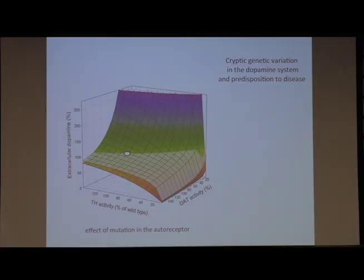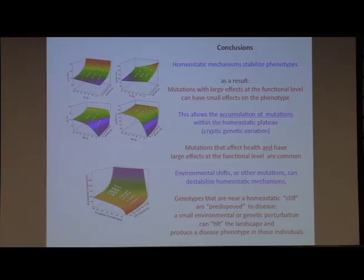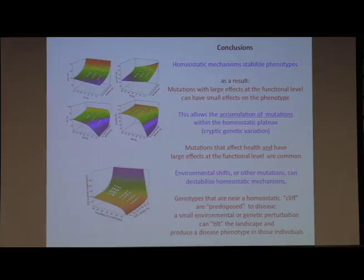I think I'm out of time, so I'll stop right there. The conclusions: homeostatic mechanisms stabilize phenotypes. Therefore, mutations with large effect at the functional level can have very small effects at the phenotypic level. That allows accumulation of mutations within that homeostatic plateau — what we think of as cryptic genetic variation. Mutations that affect health and have large effect at the functional level are common; it's just that they don't have large effects at the phenotypic level because they're being buffered. Environmental shifts or other mutations in the system can destabilize these homeostatic mechanisms, and when that happens, phenotypes that are near some homeostatic cliff are predisposed to disease — they don't have disease necessarily, but if something happens, they're so close to the cliff that disease phenotypes will arise.